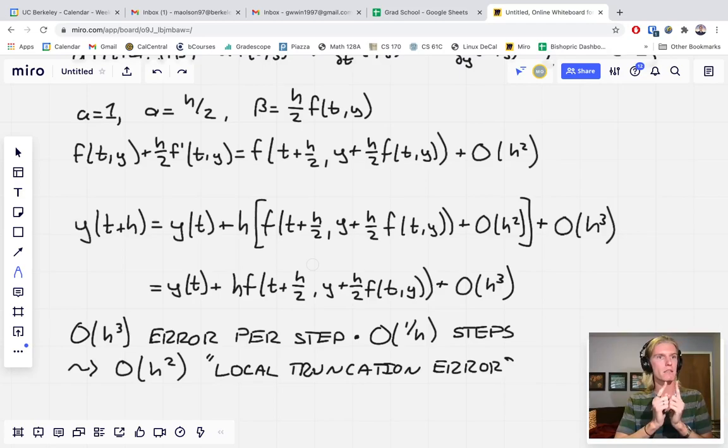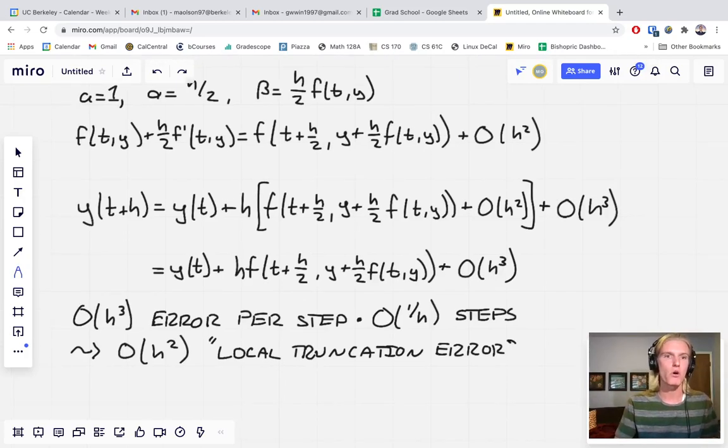we are increasing the number of steps that we are taking to approximate y on that interval. So we're only making order of h cubed error per step. But we are taking order one over h steps. And so this gets us to our order h squared, and what we call local truncation error.